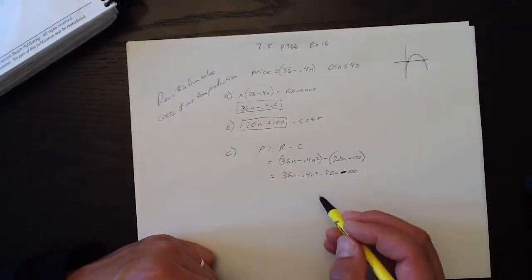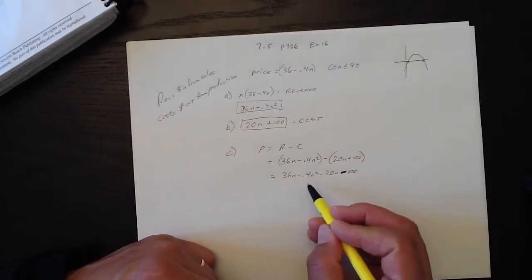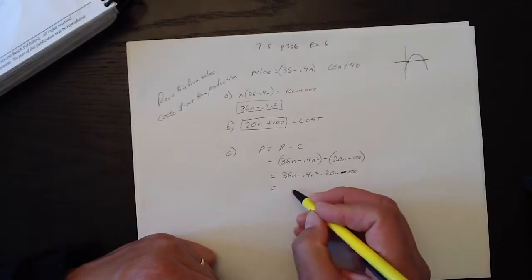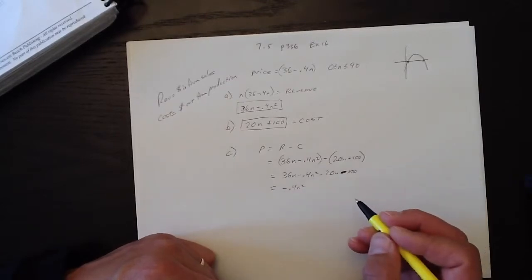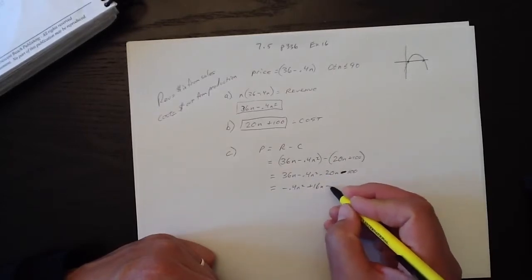So the profit then, if we take this all out of its brackets, we get 36n minus 0.4n squared minus 20n minus 100. We can clean this up a little bit. Profit equals negative 0.4n squared plus 16n minus 100.